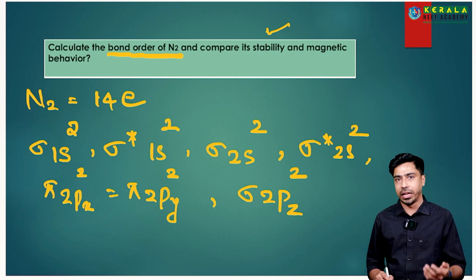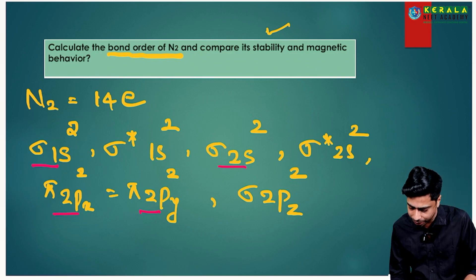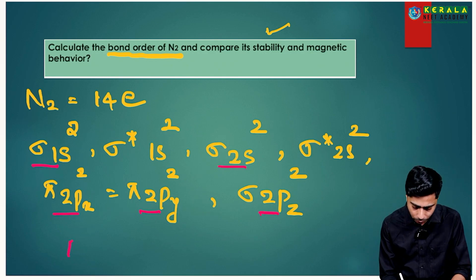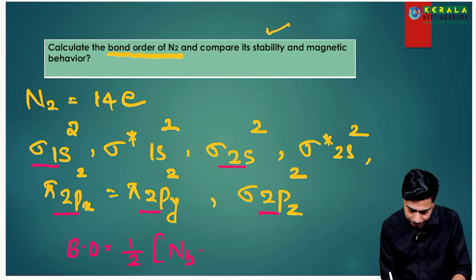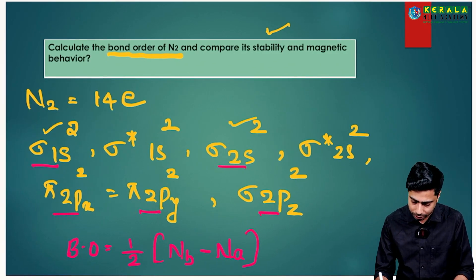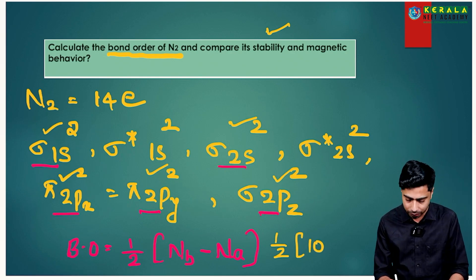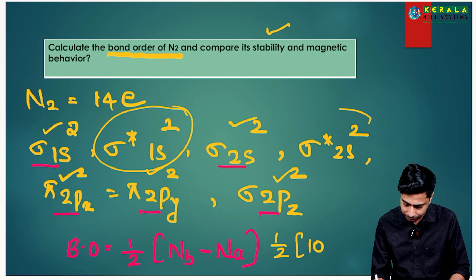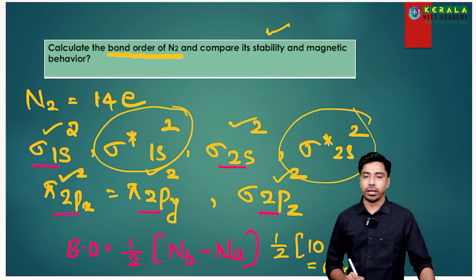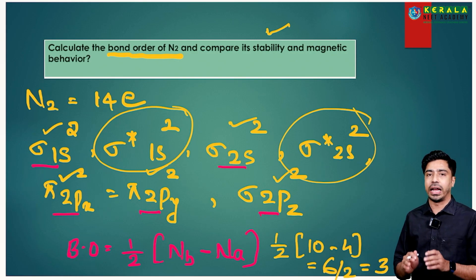Now we identify bonding vs. anti-bonding orbitals. Those without a star are bonding molecular orbitals; those with a star are anti-bonding. Applying the formula: bonding electrons (Nb) = σ1s²+ σ2s² + π2px² + π2py² + σ2pz² = 10. Anti-bonding electrons (Na) = σ*1s² + σ*2s² = 4. Bond Order = ½ × (10 − 4) = ½ × 6 = 3. Since bond order is positive, N2 is stable.